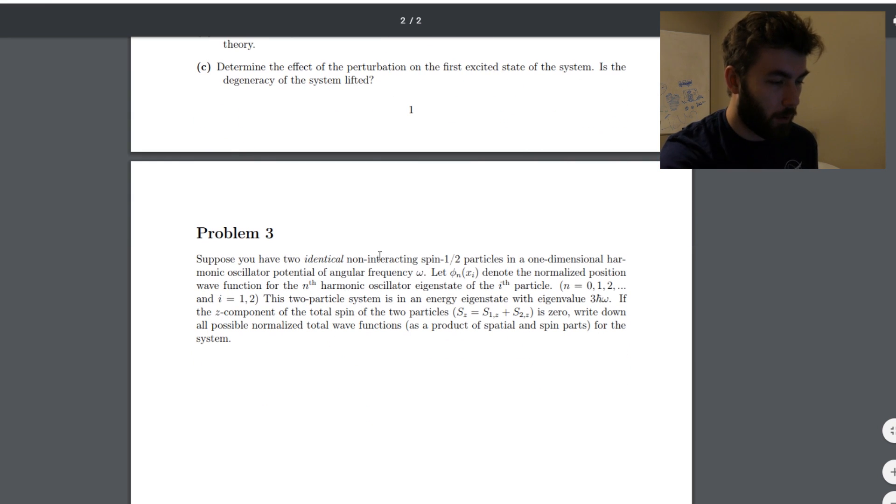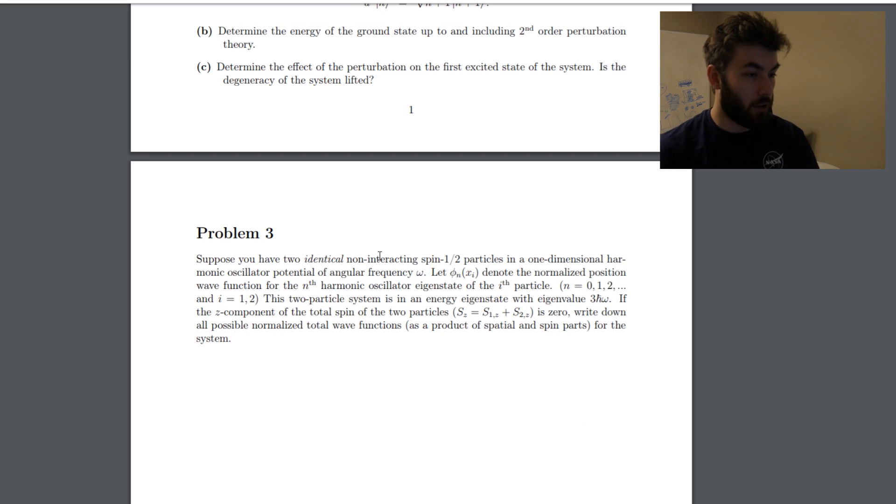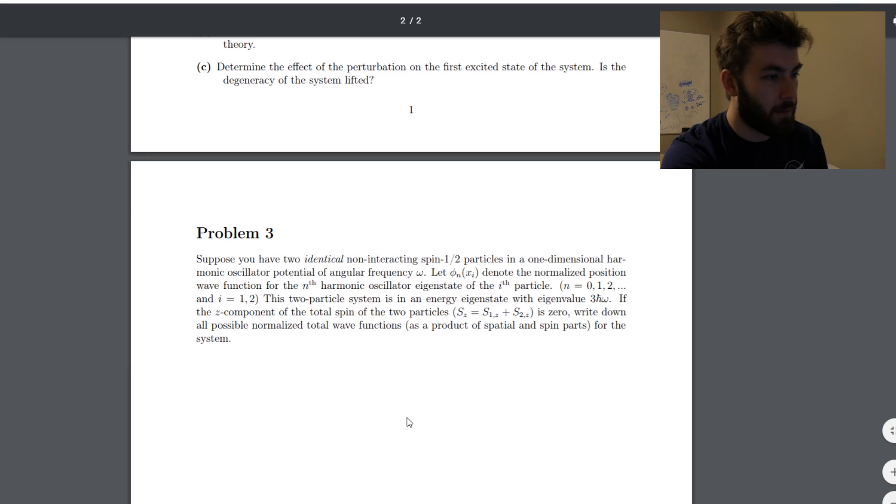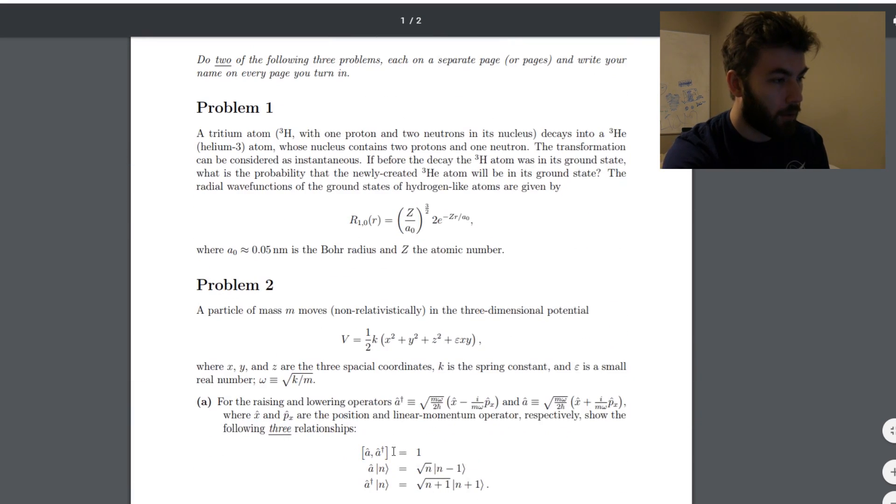Sorry, I totally got sidetracked. Let phi sub n denote a normalized position wave function for the nth harmonic oscillator. This two-particle system is an energy eigenstate with this eigenvalue. Write down all possible normalized wave functions as a product of spatial and spin parts. Yeah, so these three questions seem extremely fair with quantum.